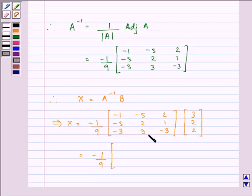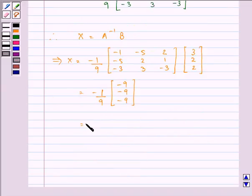On solving, we have minus 1 by 9 times, solving these two matrices gives us minus 9, minus 9, minus 9, which on multiplying by minus 1 by 9 gives us 1, 1, 1.